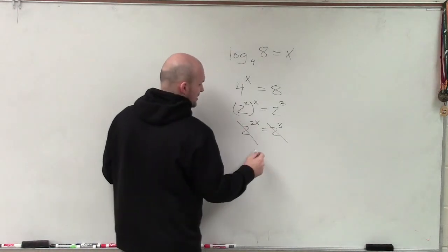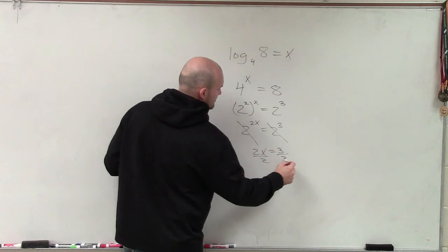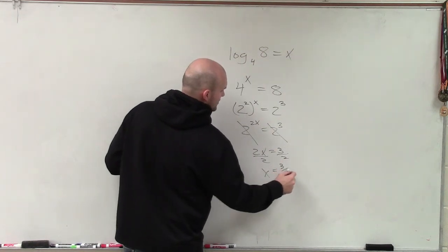So therefore, 2x equals 3, divide by 2, and x equals 3 halves.